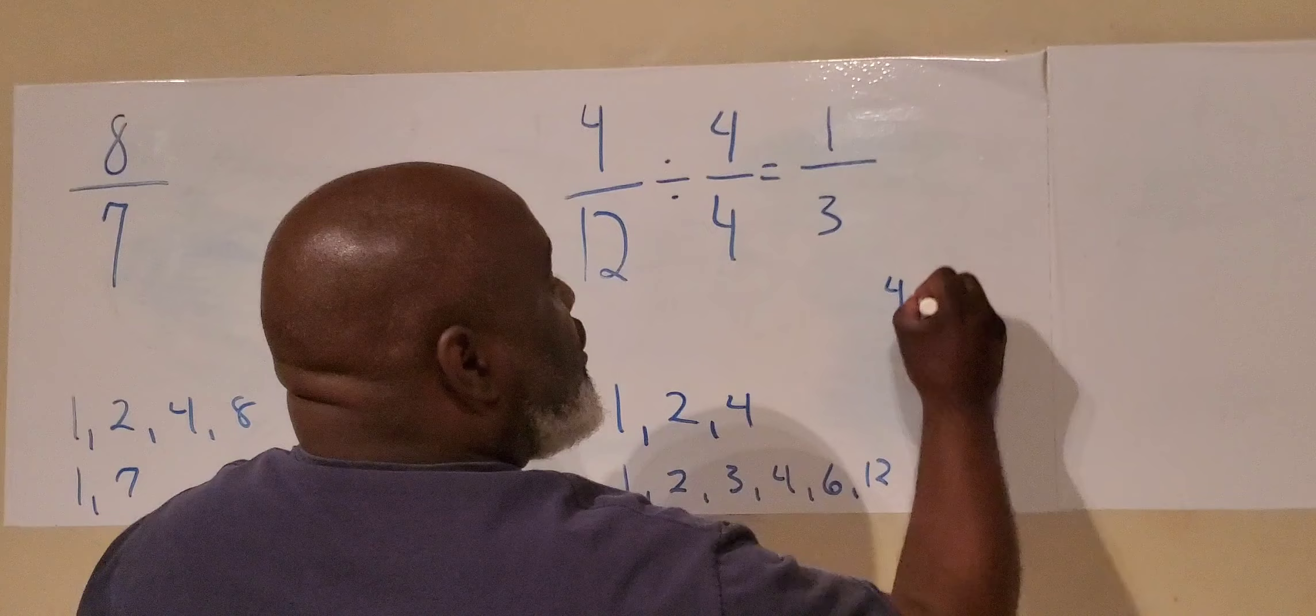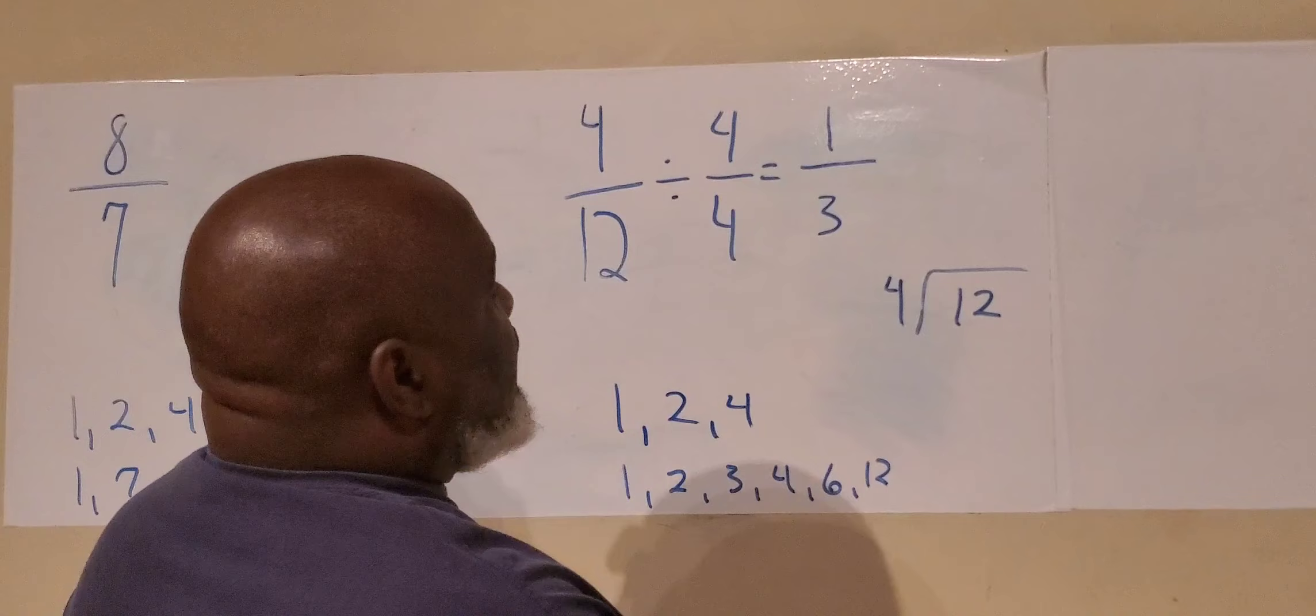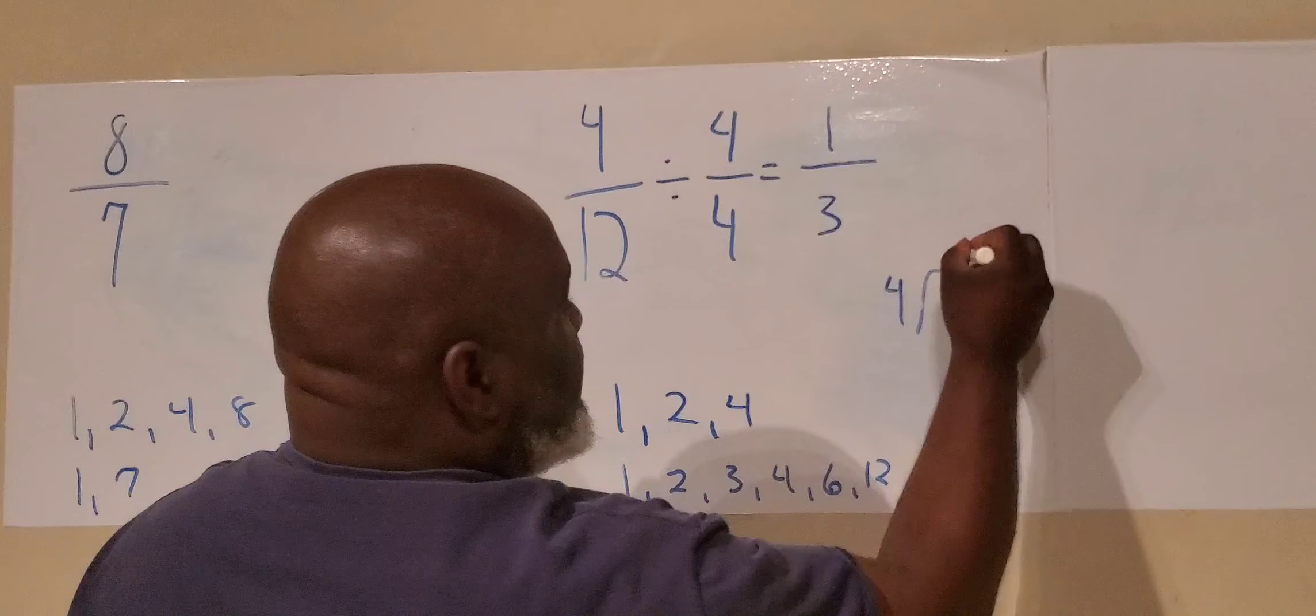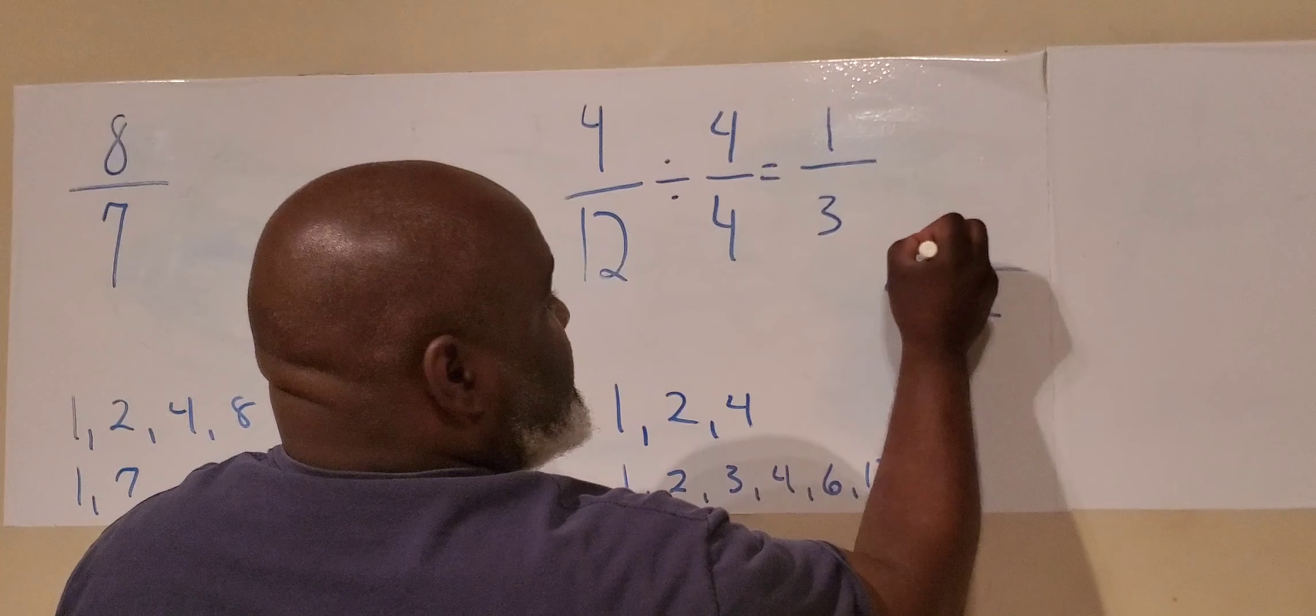Breaking this down even further, we have four divided by 12. And we check our division with multiplication. Likewise, we check our multiplication with division. Four divided by 12. How much can this go in? So four times what equals one? Nothing.